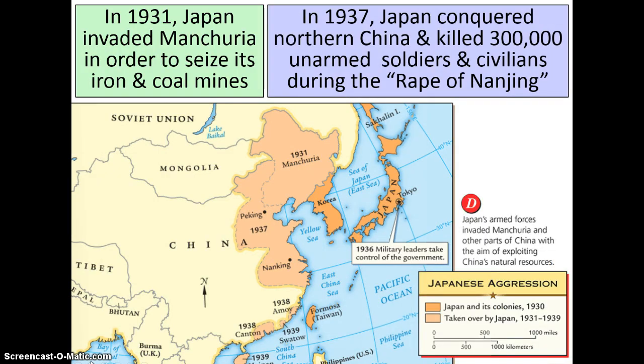Here's some reiteration of what we've been talking about regarding Japan — where they went and why. One of the most famous attacks was the Rape of Nanjing, which is interesting enough for you to go look up on your own. I don't want to get super depressing about what they did, but the Japanese were super cruel in what they did to the Chinese there.